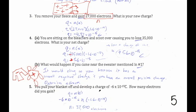Problem 5: pulling your blanket off develops a charge of negative 6×10⁻¹⁵ coulombs — how many electrons did you gain? Each electron has charge negative 1.6×10⁻¹⁹. Divide both sides by negative 1.6×10⁻¹⁹ to isolate n. The result is 37,500 electrons, or equivalently 3.75×10⁴ electrons.